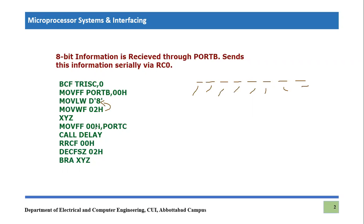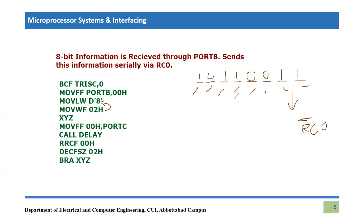Then we move file-to-file 0x00 to port C. The value at 0x00 holds the port B value — for example, 1, 0, 1, 1, 0, 0, 1, 1. This value transfers directly to port C, but since only RC0 is configured as output, only the LSB transfers through RC0. Then we call a delay subroutine so that one bit is transferred easily.